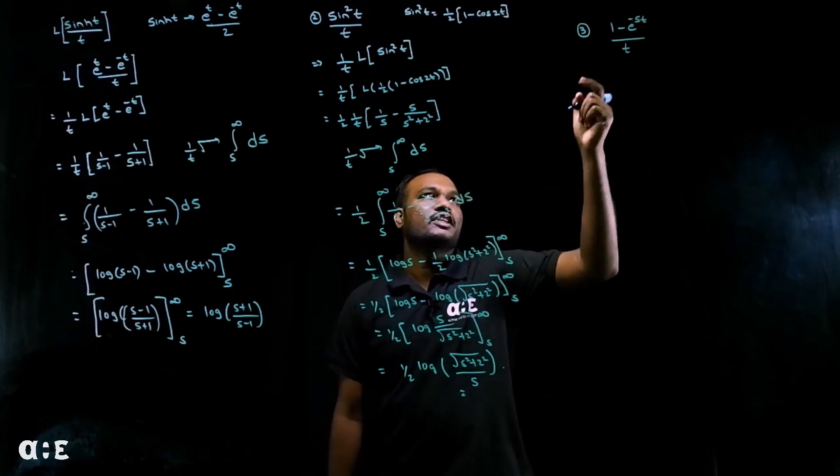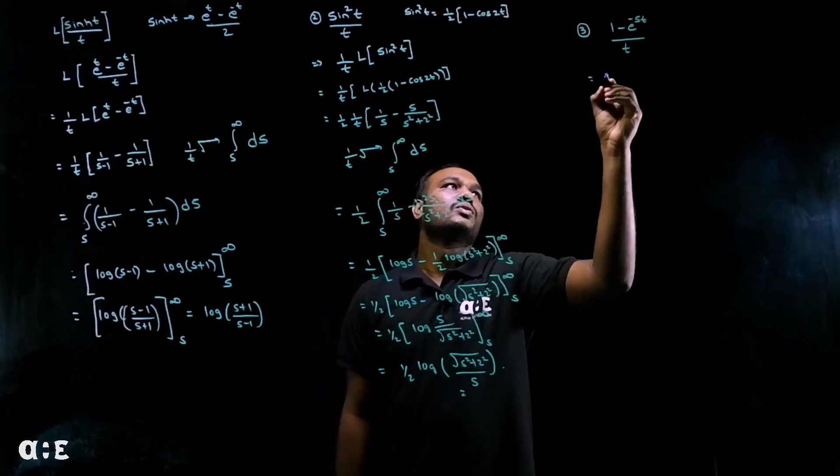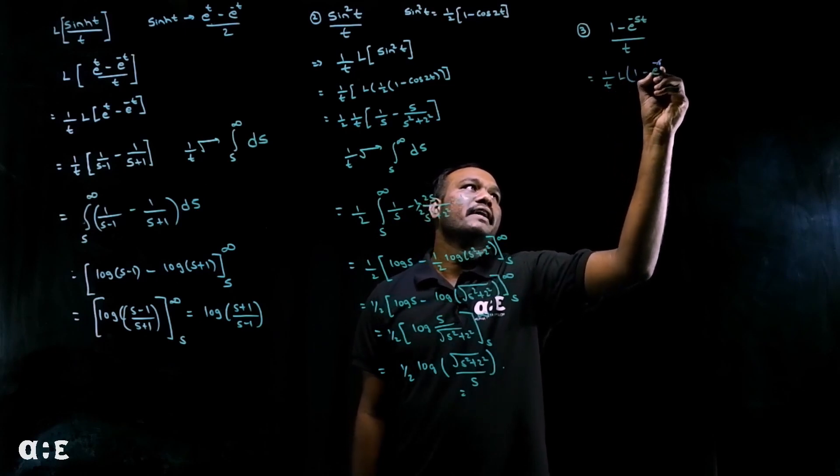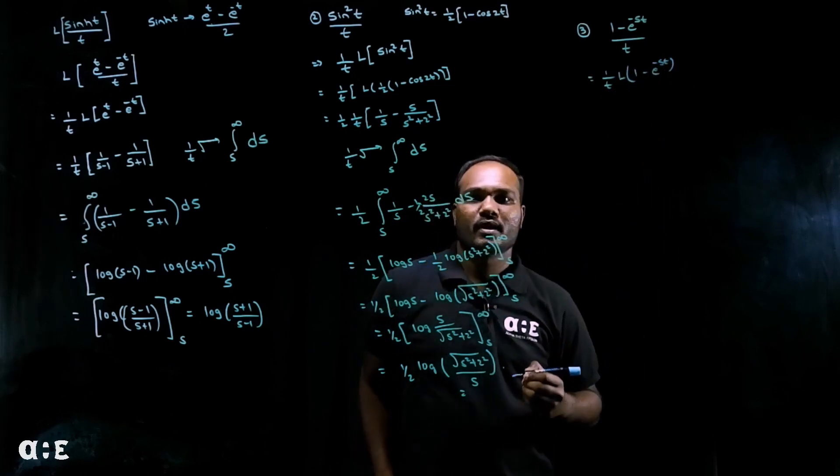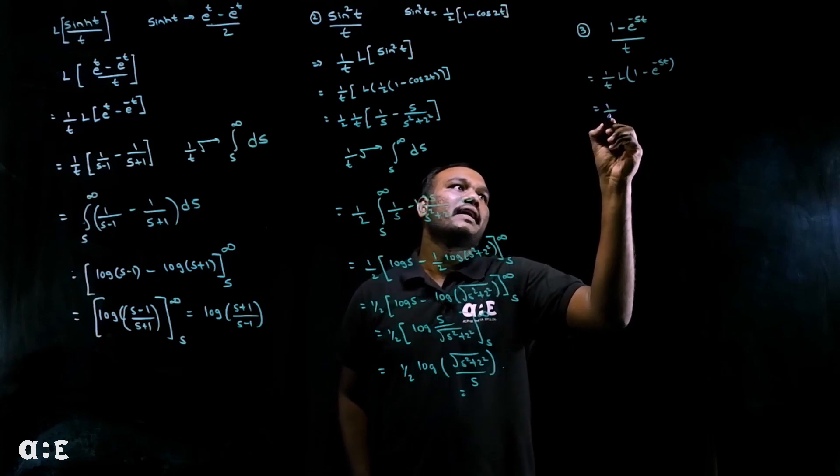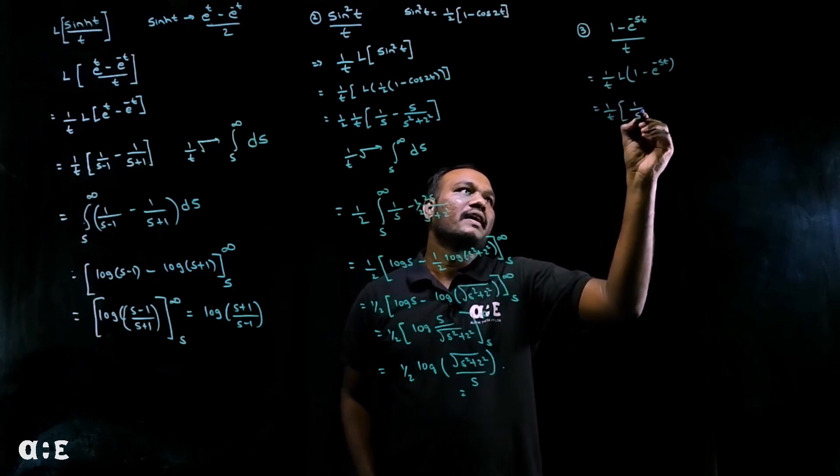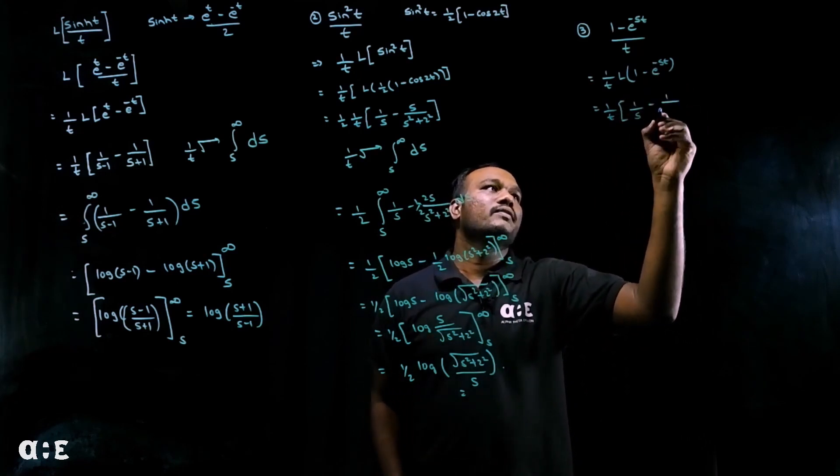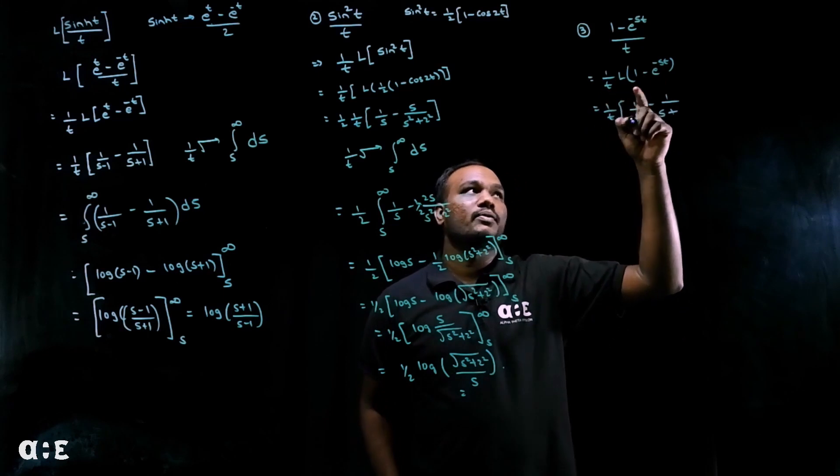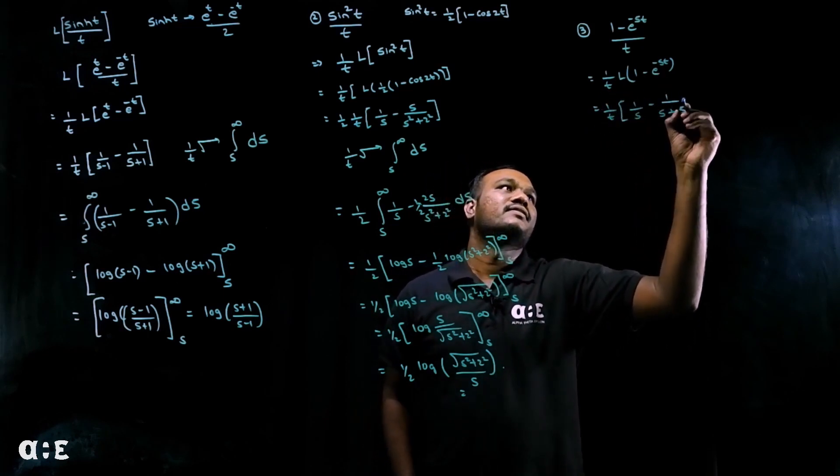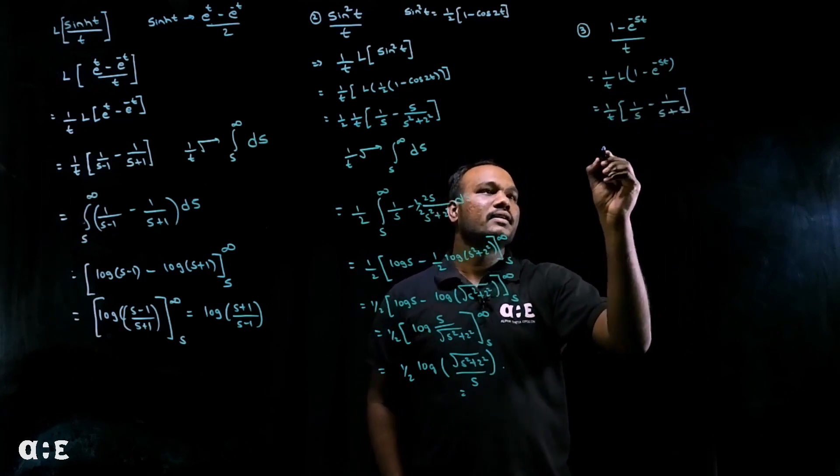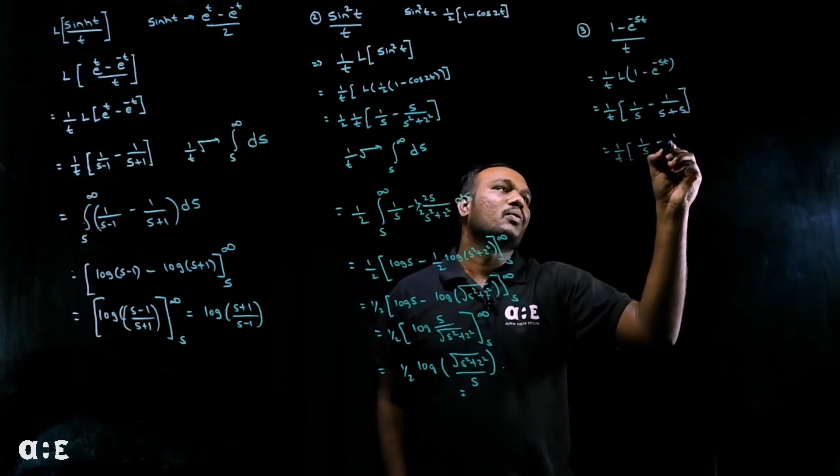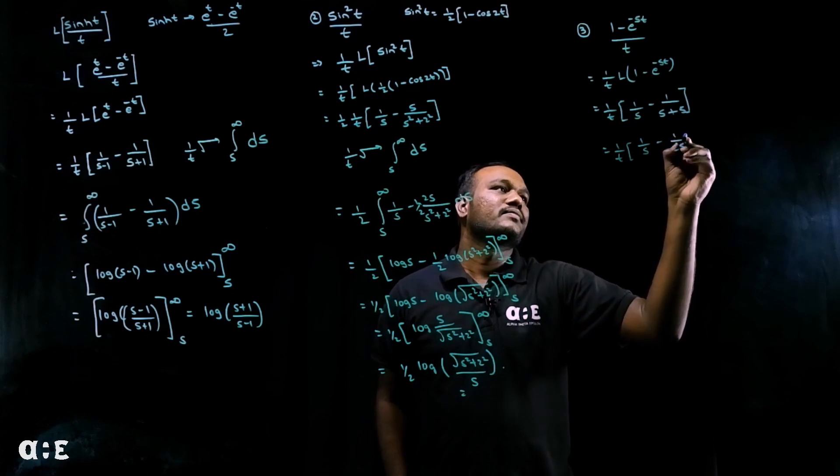Let's try to find the Laplace transform of this. So let's take one by t outside: Laplace transform of one minus e power minus st. So let's keep one by t as it is. Laplace of one is one over s minus Laplace of e power minus st, which is one over s plus t coefficient. What is the t coefficient here? s itself.